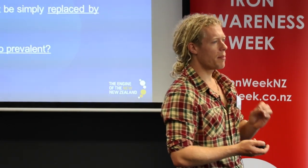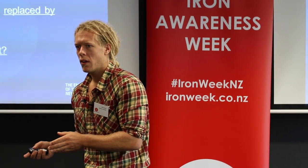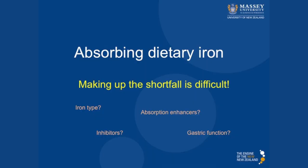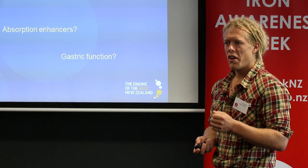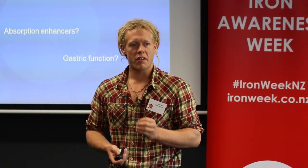Iron is incredibly abundant — it's the sixth most abundant metal on Earth. So the question is, we don't actually need much iron from the diet to replace what we've lost, and iron is very abundant. So why is iron deficiency so prevalent? Why do we have such a problem? The answer seems to be that absorbing dietary iron from the food into the cell and into the blood is incredibly difficult, and it's affected by many different things including iron type, other factors in the diet, absorption enhancers, absorption inhibitors, your physiological state, your pathological state, and gastric function.